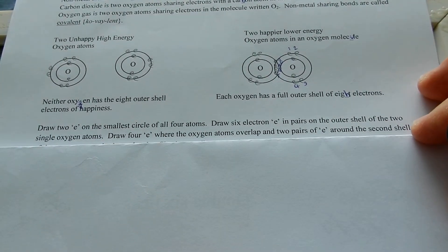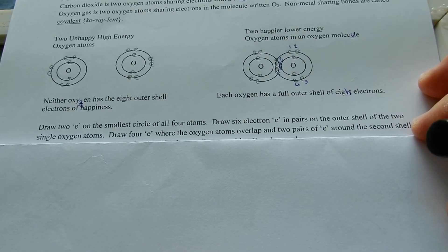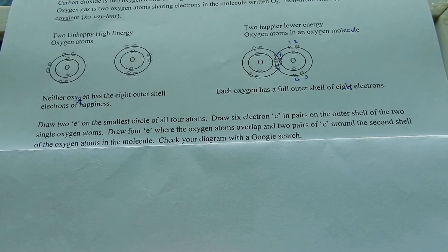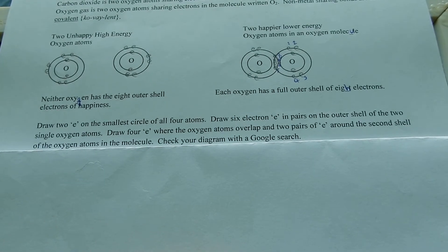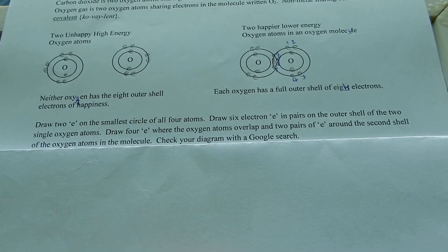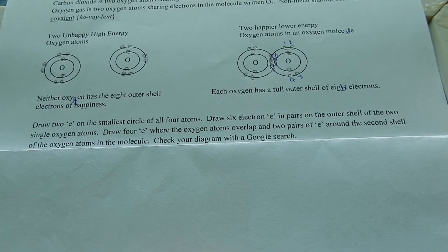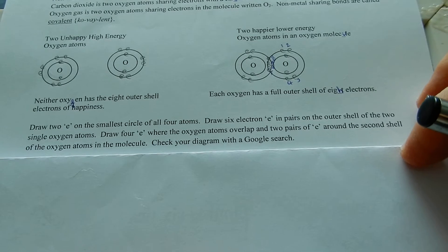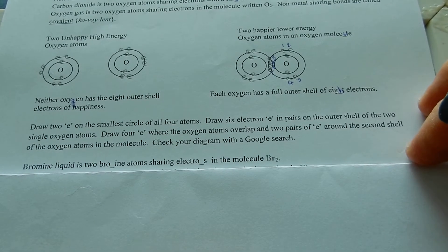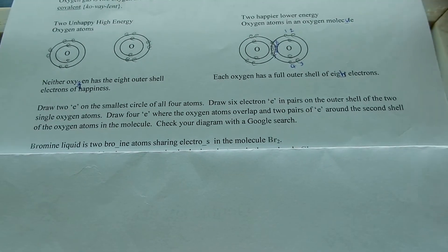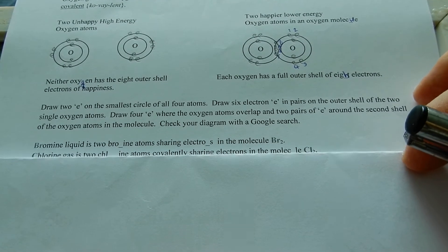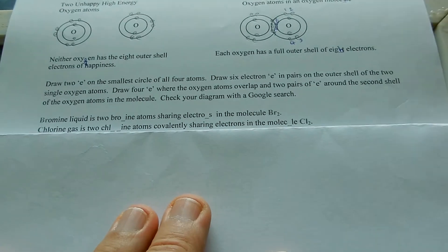Draw 2e on the smallest circle of all four atoms. Draw 6e in pairs on the outer shell of the two single oxygen atoms. Draw 4e where the oxygen atoms overlap and two pairs of e around the second shell of the oxygen atoms in the molecule. Check your diagram with a Google search.